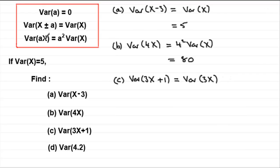So, we're back to this idea here now, where a is the 3, and we end up squaring it. So, it's going to be 3 squared times the variance of X. 3 squared is 9, and the variance of X was 5. So, we've got 9 times 5, which is 45. So, I hope you got that one.